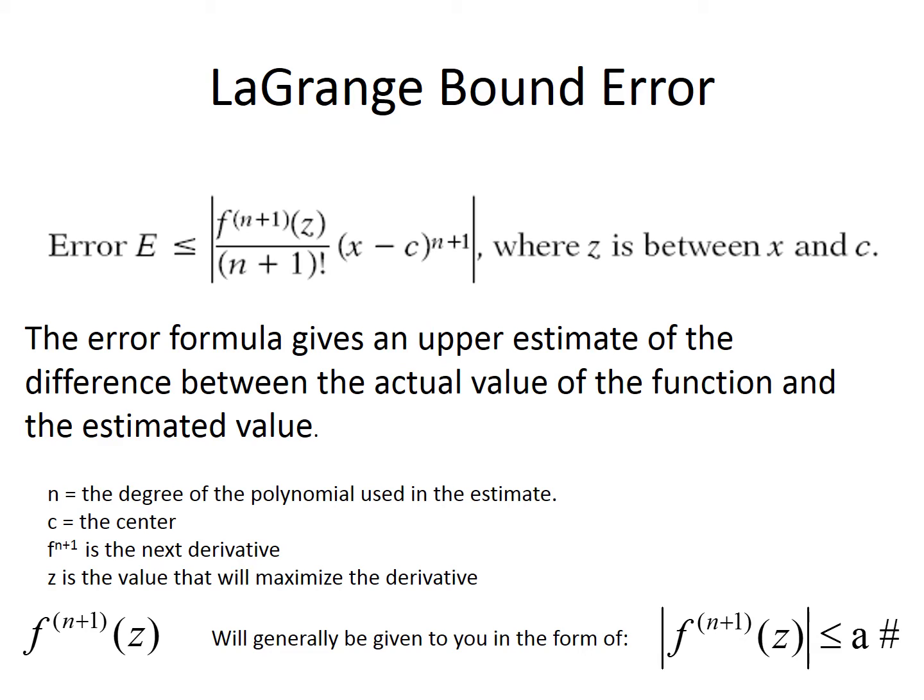So what you need to know is n is the degree of the polynomial used to find your estimate, c is your center. Now the most difficult part of this formula is determining the value, the f to the n plus 1 to the z. This is probably the most difficult part of this formula.